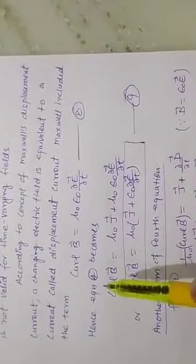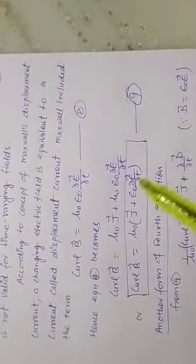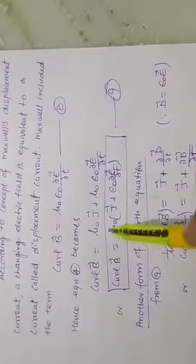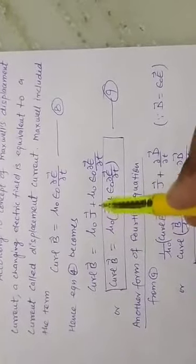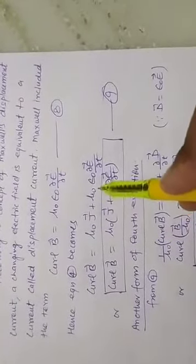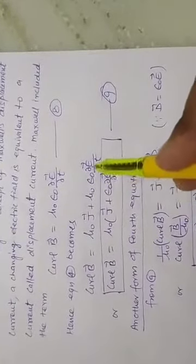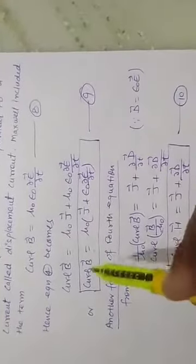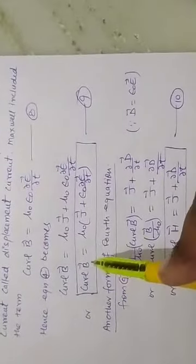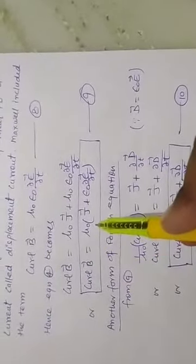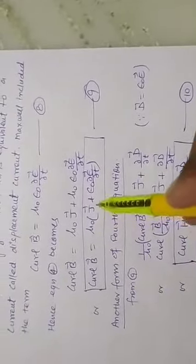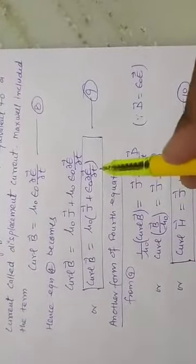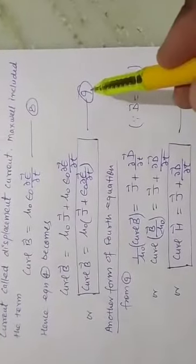Hence equation number 4 becomes: curl B vector is equal to μ₀ J vector plus μ₀ε₀ ∂E/∂t. That is, curl B vector equals μ₀ J vector plus ε₀ ∂E/∂t. Equation number 9.